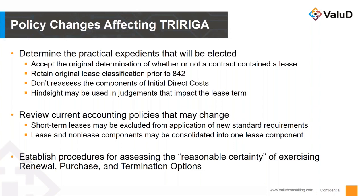The third item is related to the changes in the components of initial direct cost. The importance of this is that under 840, there are quite a few other components that are allowed to be considered part of the initial direct cost, and that is limited under 842. But the practical expedient allows you to retain those original components and that original value as you load that value into Trieria, so you don't need to go back and dissect the components of that initial direct cost when you set up your lease record.